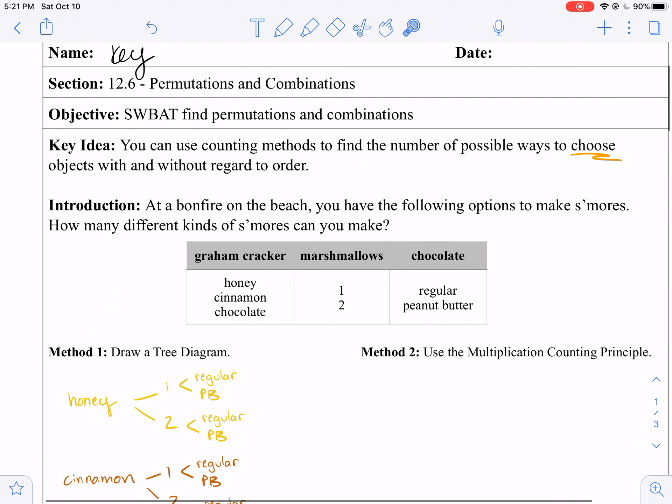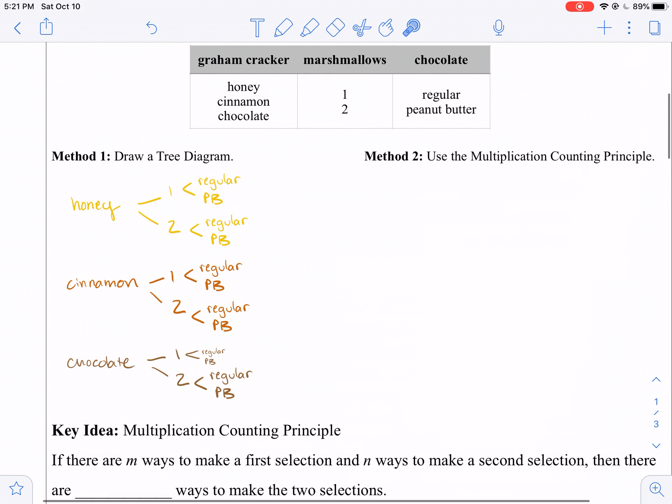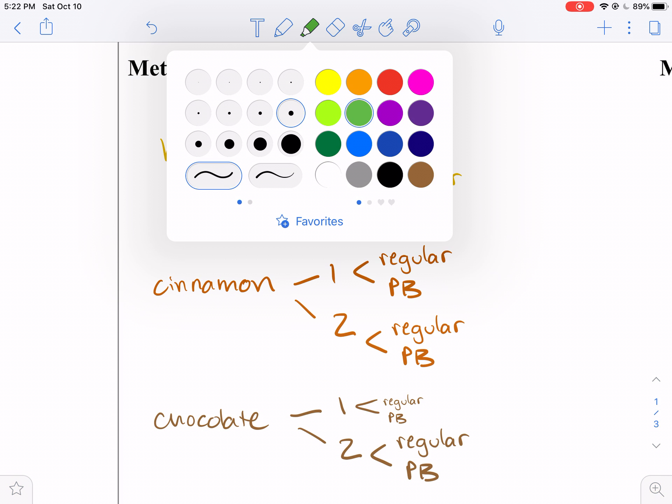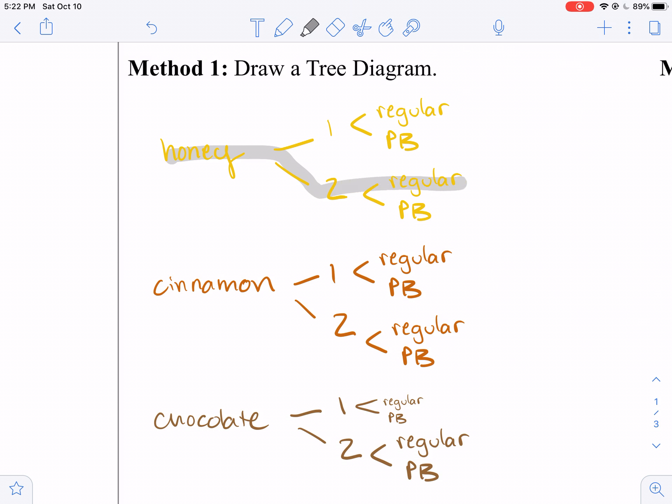You can also choose how many marshmallows to have, one marshmallow or two marshmallows on your s'mores. And then finally, you can choose what kind of chocolate do you want to have, a regular chocolate bar or a peanut butter cup in with your s'more? If I have inspired you to make some gourmet s'mores, s'more-may if you will, and you want to pause the video and go ahead and make a s'more, that's great. We'll see you in approximately five minutes.